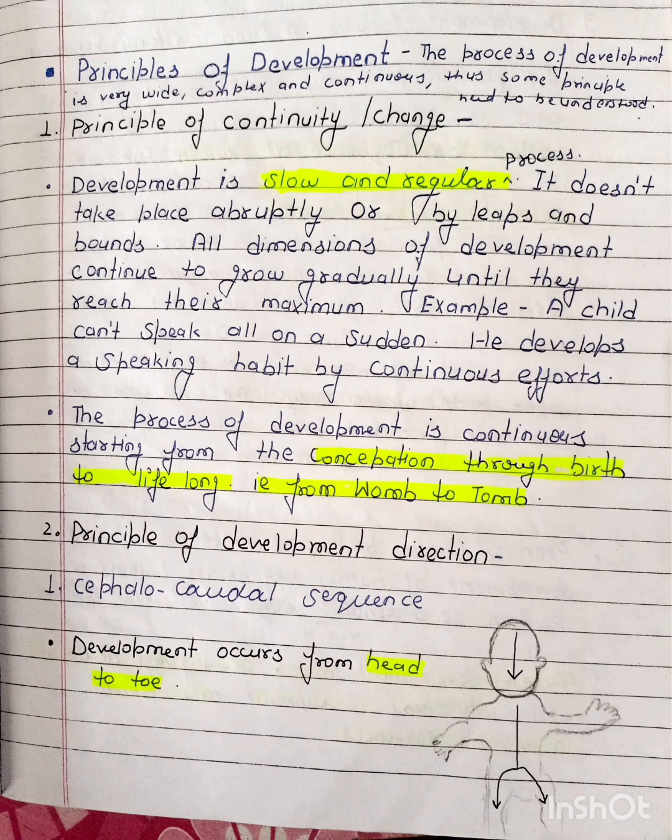The process of development is continuous, starting from conception through birth to lifelong — from womb to tomb. This is a continuous process; it starts from the womb and ends at the tomb.